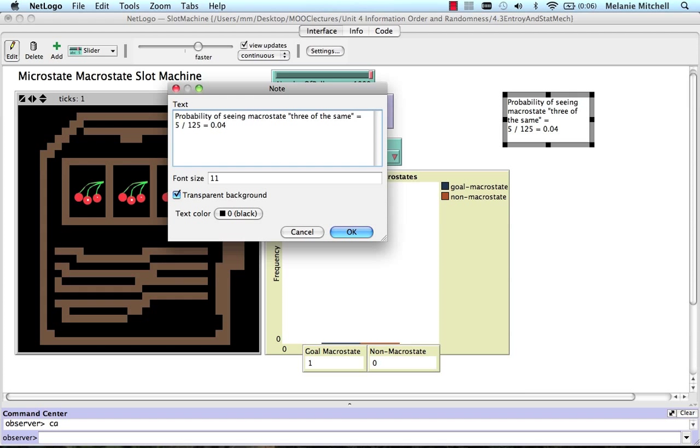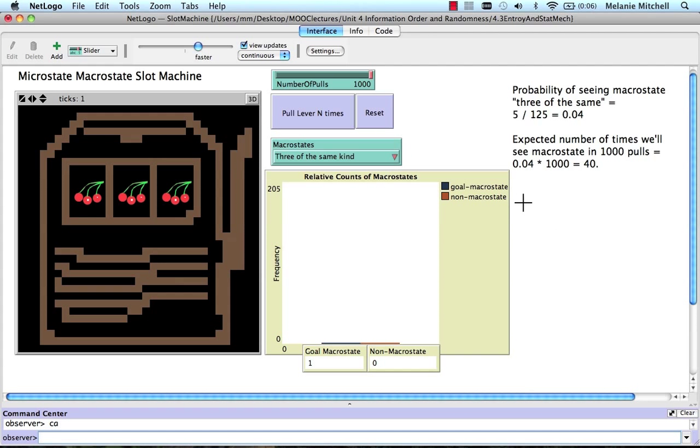Therefore, the expected number of times we'll see our macrostate in 1,000 pulls, that's going to be equal to the probability for one pull times the number of pulls, which is equal to 40. So let's see how close we are. That's expected.